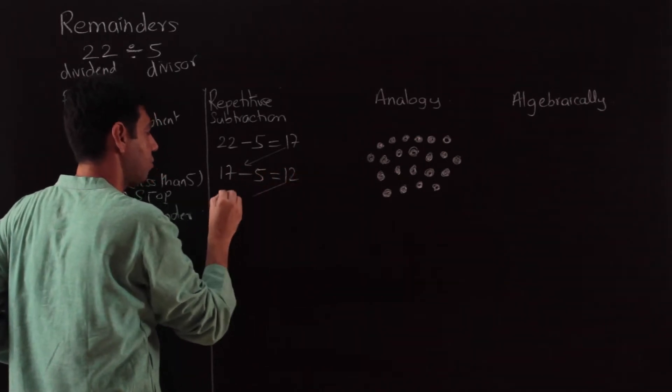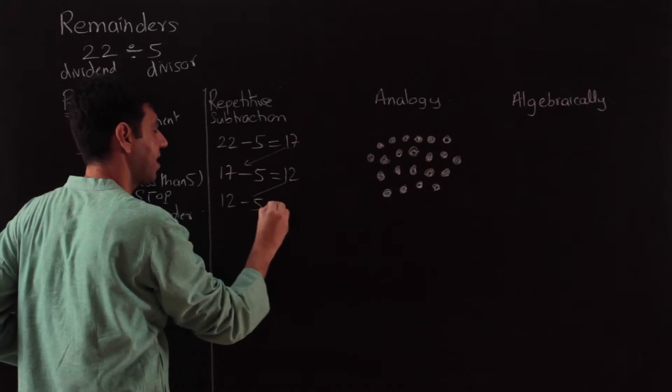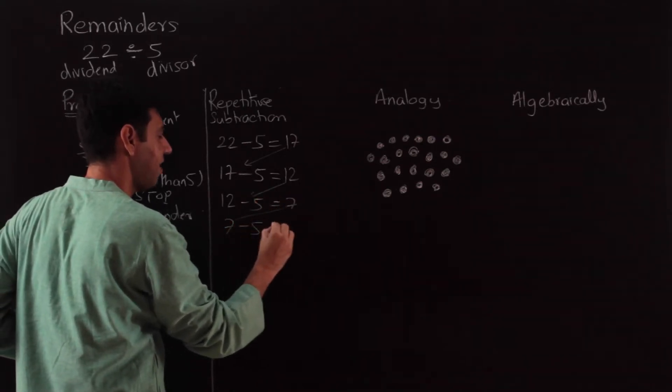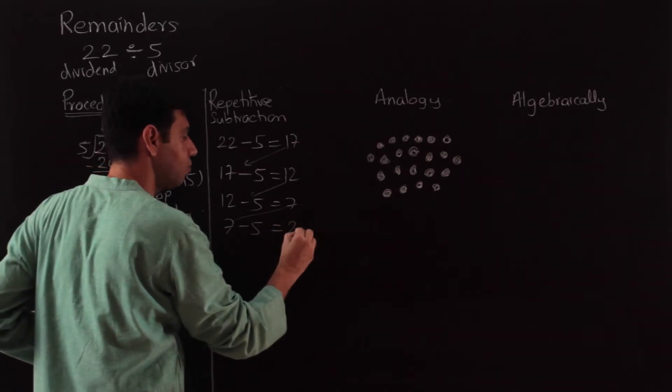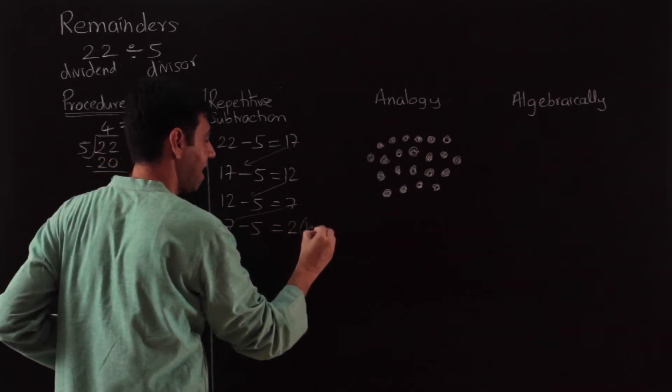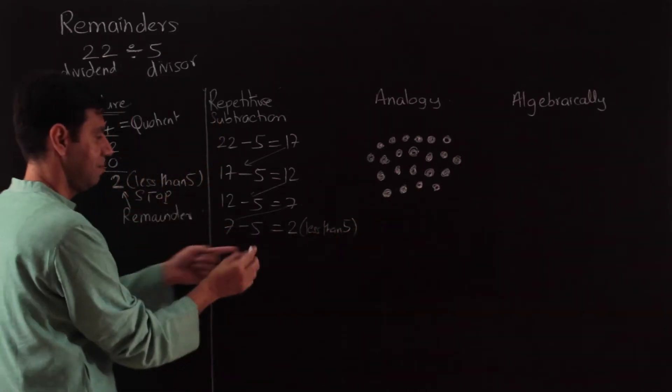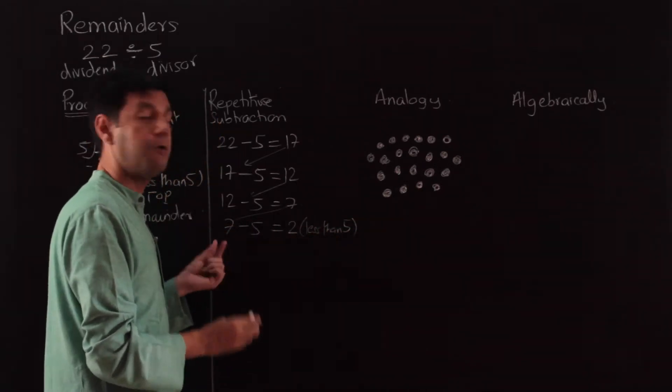From 12 you subtract 5 again, I'll be left with 7. Take the 7, subtract 5, and I'll be left with 2. Now this 2 is less than 5. I hope you understand why that 'less than 5' is important—because from 2 I cannot subtract 5 further.